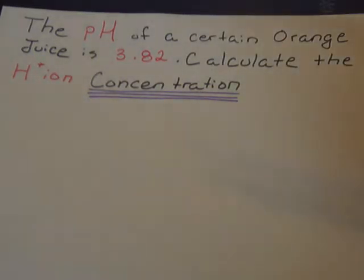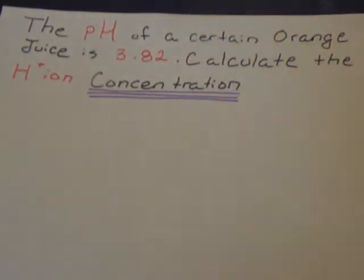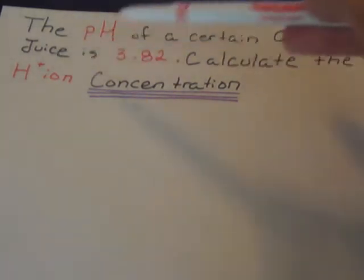So as we can see here I labeled the pH and the H ion in red because pH and the H ion go together. The OH and the pOH go together. So in this case we're good.